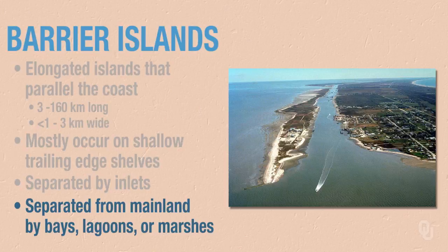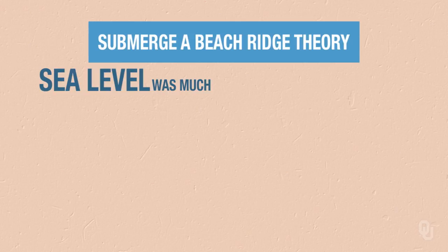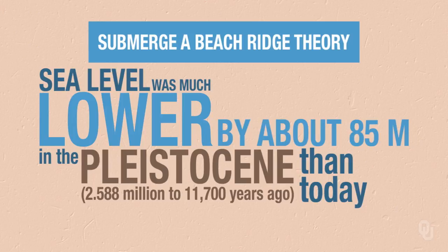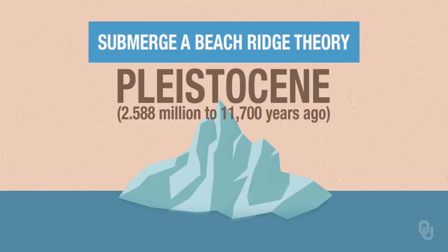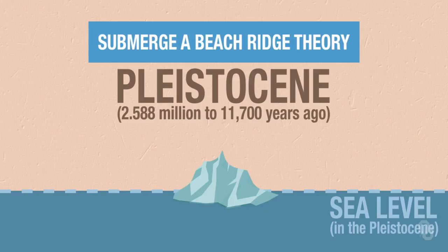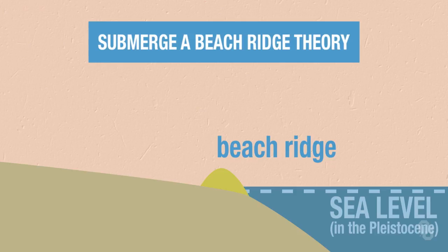How do barrier islands form? The most accepted theory is called the submerged beach ridge theory. Sea level was much lower, about 85 meters lower in the Pleistocene than today. During the Pleistocene, there were large glaciers, and because there were large glaciers on the continent, sea level was lower. As the ice started to melt, sea levels started to rise, and there were perhaps beach ridges along the shoreline. As sea level rose, some of those beach ridges were drowned or became separated from the mainland by a lagoon.